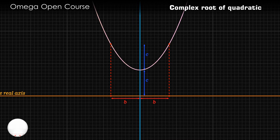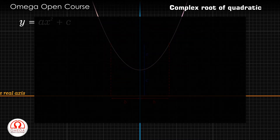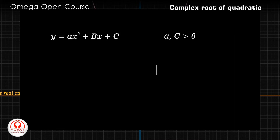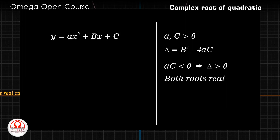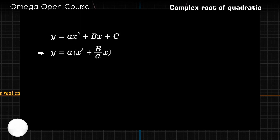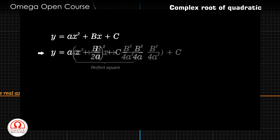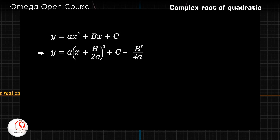But what about quadratic expressions that are not in the form y = ax² + c but still have complex roots? Let there be a general quadratic expression y = ax² + bx + c, where a and c are greater than 0. It is necessary for a and c to be of the same sign, because if they are of opposite sign then the discriminant b² − 4ac becomes positive and the equation always has real roots. Now take a common to write a(x² + (b/a)x) + c, then add and subtract b²/4a² inside the bracket. These terms make a perfect square, which reduces to a(x + b/2a)² + c − b²/4a.